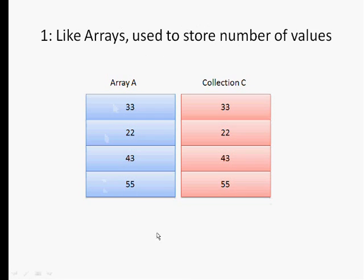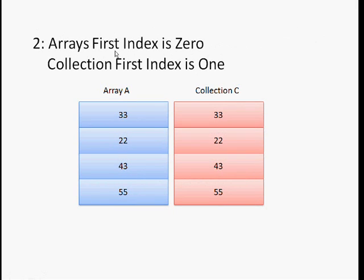Now let's go to the second property. Arrays' first index is 0, while collection's first index is 1.